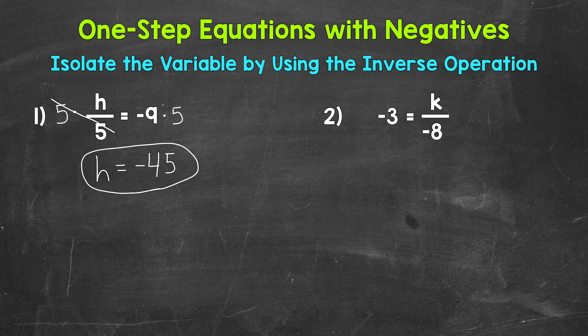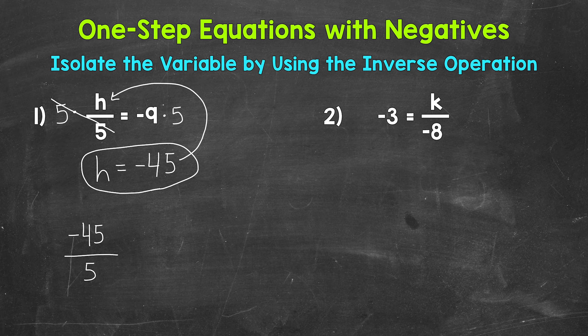That's our solution. We can always check by plugging the solution into the original equation. Let's plug negative 45 in for h: negative 45 divided by 5 equals negative 9. A negative divided by a positive equals a negative, so negative 45 divided by 5 does equal negative 9. We have the correct solution: h equals negative 45.